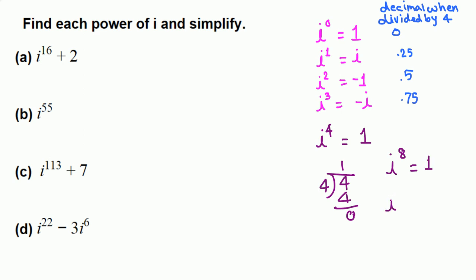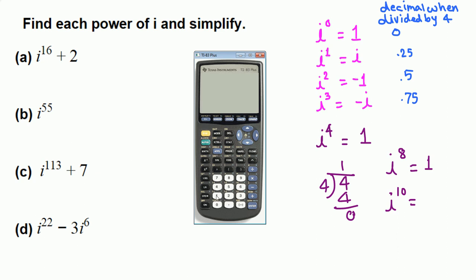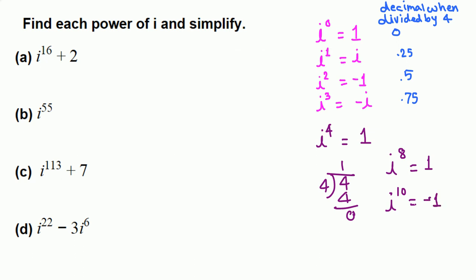If we have i raised to 10, when we divide 10 by 4, we can use a calculator. 10 divided by 4 we get 2.5. The 0.5 decimal means remainder 2, and 0.5 corresponds to negative 1. So i raised to 10 is negative 1.